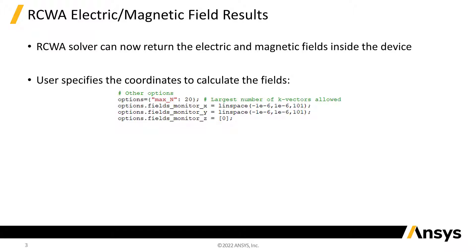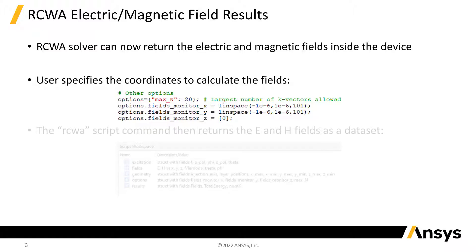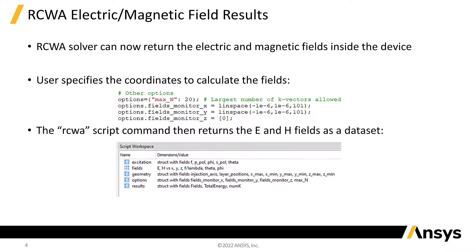To use this feature, the user specifies the X, Y, and Z coordinates where they would like the field to be calculated in the options struct variable in a numerical script file. The RCWA script command will then return the electric and magnetic fields in a dataset as part of the results.